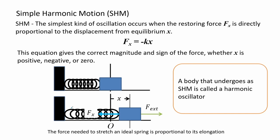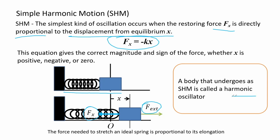Simple harmonic motion, or SHM, is the simplest kind of oscillation. It occurs when the restoring force F is directly proportional to the displacement from equilibrium X, as shown by the equation F equals negative KX. A block oscillates in periodic motion, initiated by an external force whose magnitude is equivalent to the restoring force exerted by the spring. Once released, the body continues to vibrate in simple harmonic motion. Objects that undergo SHM are called oscillators.